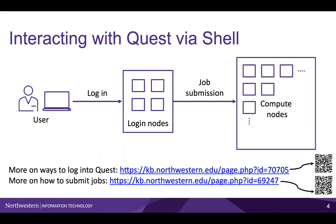Quest consists of four login nodes and hundreds of compute nodes. When you first log into Quest, you will land on a login node. Because they are shared, the computational resources on the login nodes are quite limited, so users are restricted on how much memory and cores they can use directly on the login nodes. For that reason, login nodes aren't where you will run most of your programs, but instead are where you will edit your files, test your code, move and manage your data, and submit jobs for the compute nodes to execute.